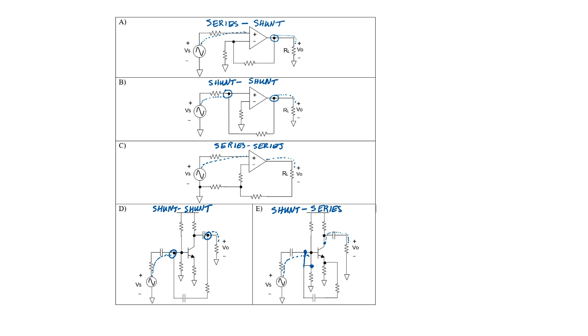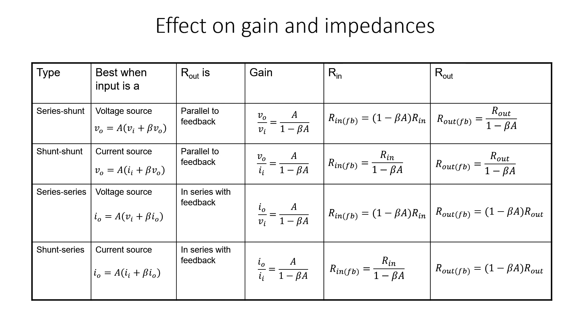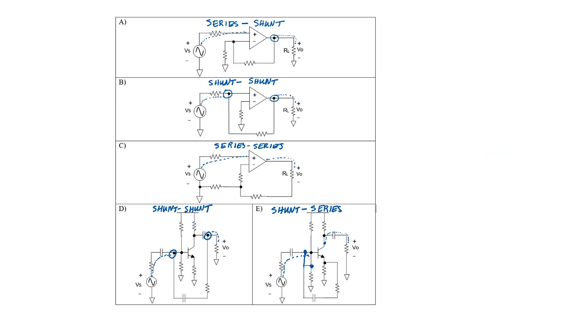Now that I've identified the type of feedback in each of these circuits, if I wanted to know the effect of the feedback on the input and output impedance, I could merely look at the chart and note whether the input and output impedance is increased or decreased. For example, for the series-series configuration, the input impedance will be increased relative to the case without the feedback network, and the output impedance would be increased as well. Keep in mind that A·beta is a negative number. For the shunt-shunt configuration, both the input and output impedance will be modified depending upon the sign of A·beta. In each of these circuits, let's identify the sign of A and beta.